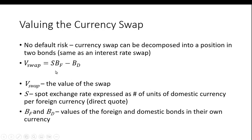Whenever you're dealing with foreign exchange rates, you can quote this two ways — we could also quote how many yen it takes to buy a dollar. So whenever you see formulas like this, you have to know how the exchange rate is quoted. BF and BD are the values of the foreign and domestic bonds in their respective currencies.